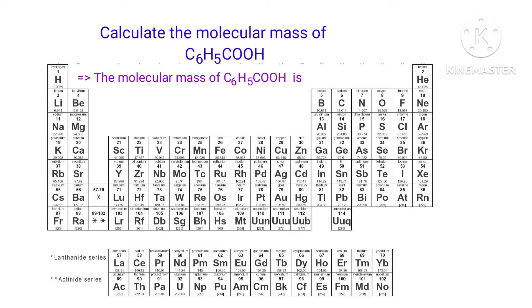So the molecular mass of C6H5COOH is 12.011 into 7 plus 1.0079 into 6 plus 15.999 into 2. That is equal to 122.1224 g per mole.